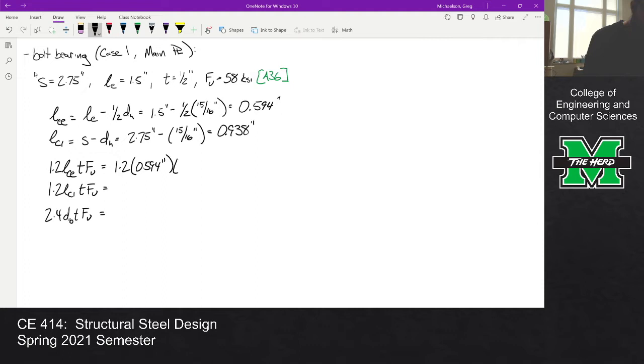So 1.2 times 0.594 inches times half an inch and 58 ksi, and this one is 20.66. I'm doing this in Excel by the way, so if your answers vary slightly it might be because of rounding.